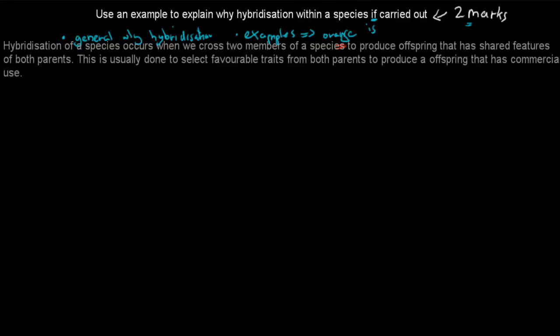So the first part is this, which is a general reason why we have hybridization. Hybridization of a species occurs when we cross two members of a species to produce offspring that has shared features of both parents. And so we want to have two members of a species being crossed.